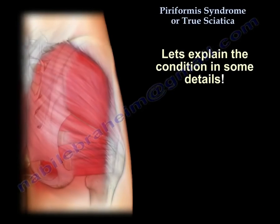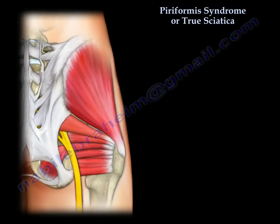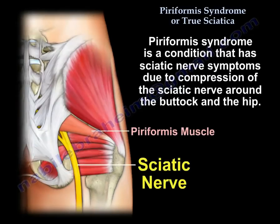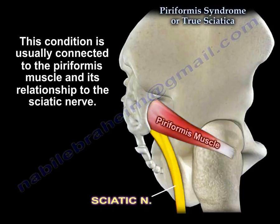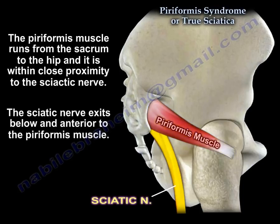Let's explain the conditions in some detail. Piriformis syndrome is a condition that has sciatic nerve symptoms due to compression of the sciatic nerve around the buttock and the hip. It is usually connected to the piriformis muscle and its relationship to the sciatic nerve. The muscle runs from the sacrum to the hip and is in close proximity to the sciatic nerve, which exits below it and is anterior to it.